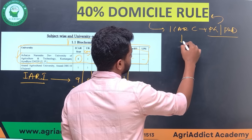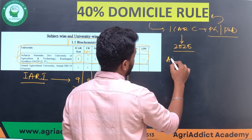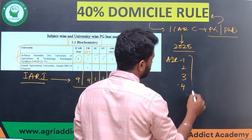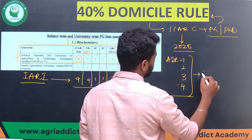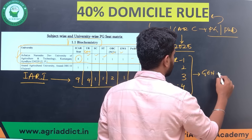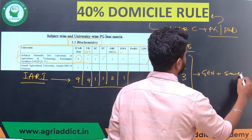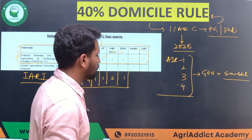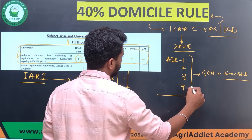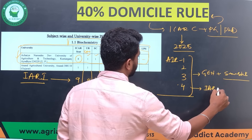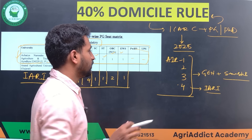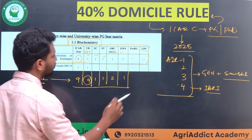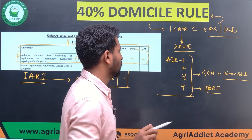Now, from the ICAR PG or PhD exam 2025, let's assume the ranks are released and the top four rankers — ranks one, two, three, and four — are all from the general category and all belong to the same state in India. If all four of them apply for IARI as their first priority during option entry, do you think all four will get IARI? Since there are four general seats, it seems like all four should get it — but that will not happen.